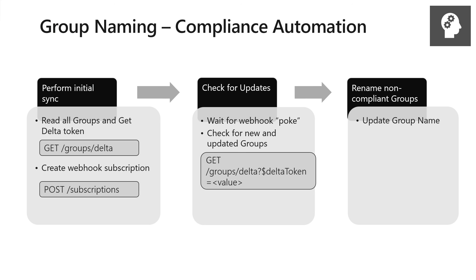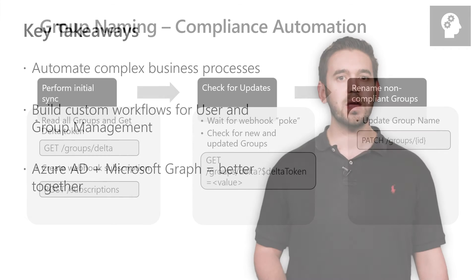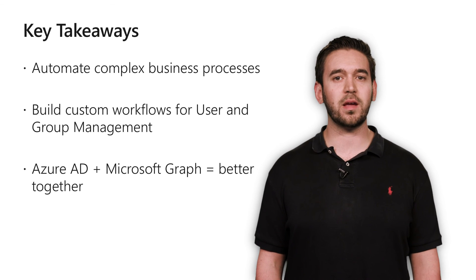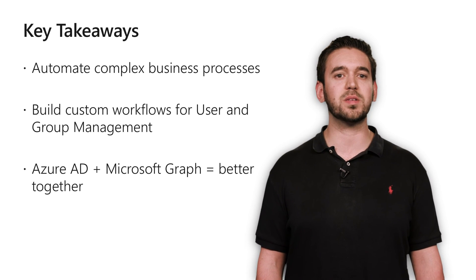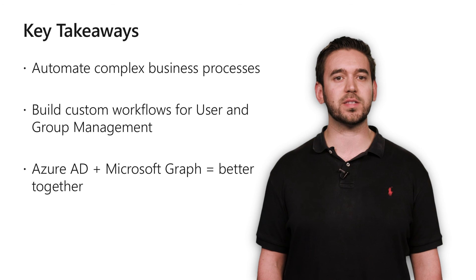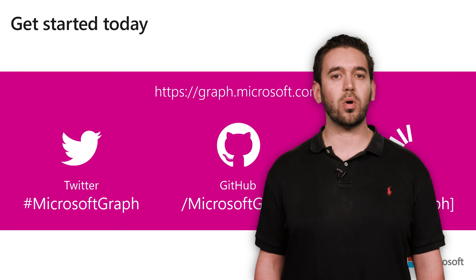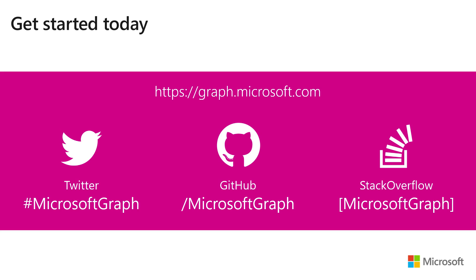If you find non-compliant groups in that list, you can automatically patch them to update the group name, or ask somebody for input on what the group name should be within the compliance requirements. In this video, you've seen how you can use Microsoft Graph to automate complex business processes and build custom workflows for user and group management, squeezing every ounce of value out of Azure Active Directory and the rest of Microsoft 365. To learn more, check out our documentation at graph.microsoft.com and try out our samples on GitHub. Be sure to tell us about your projects on Twitter and ask questions on Stack Overflow. Thanks for watching.